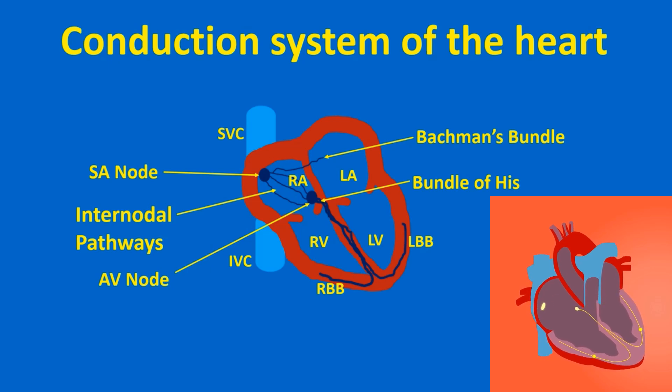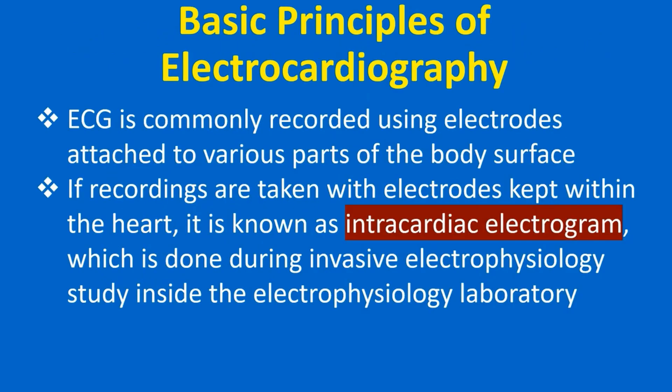From the fascicles, conduction reaches the ventricular muscles through a branching system of Purkinje fibers. Fascicles and Purkinje fibers have not been illustrated in the figure. ECG is commonly recorded using electrodes attached to various parts of the body surface. If recordings are taken with electrodes kept within the heart, it is known as an intracardiac electrogram, which is done during an invasive electrophysiology study laboratory.